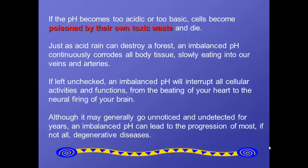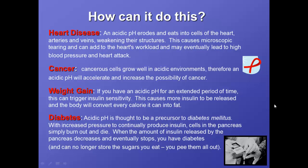Just like acid rain can destroy a forest, if your blood is too acidic, it can eat through body tissues like veins and arteries and corrode everything, putting holes in them. So if left unchecked, an imbalanced pH will interrupt all sorts of things in your body, everything from your beating heart to how your brain fires. And lots of times this will go unnoticed and undetected for quite a while, but if it progresses, it can lead to many different degenerative diseases.